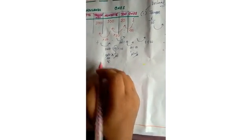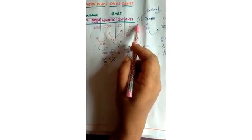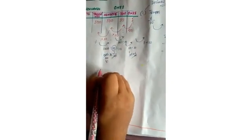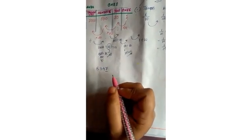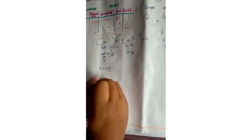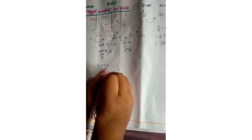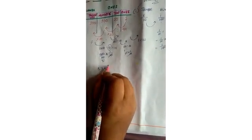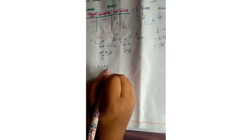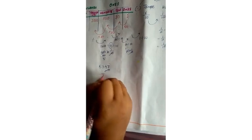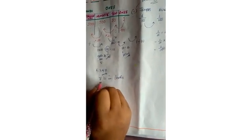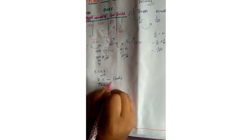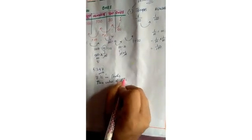Now why do we use the decimal point? Suppose a number is 5347. If I ask you that 7 is in the tens place, you might say 7 is in the ones place — meaning you are getting confused. How will you show it? I told that 7 is in tens place, but you are saying the place value of 7 is ones.